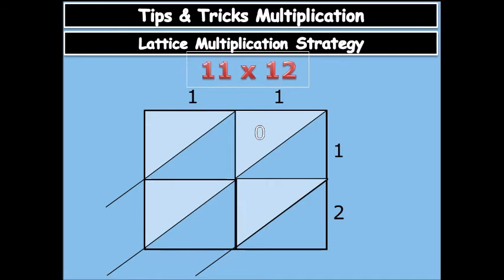Now you start by 1 times 1 is 1, so you write in the tenth column 0 and then the unit column 1. 1 times 1 also is 0 1. 1 times 2 is 0 2, and then 1 times 2 also is 0 2. When you finish you add them up, so 0 1, 1, 1 plus 2 is 3 and then 2. So your answer is what? 11 times 12 equals to 132.